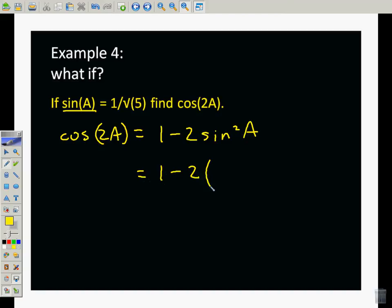1 minus 2 times sine squared of A. Well, that's really sine of A times sine of A, so that's going to be 1 divided by the square root of 5, squared. That's equal to 1 minus 2 times 1 over 5, which is equal to 1 minus 2 fifths, which is equal to 3 fifths. So we wrote our cosine of 2A in terms of sine so that we could use what they gave us to solve.